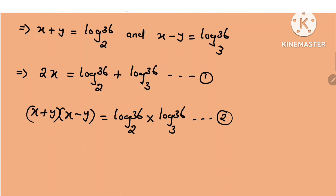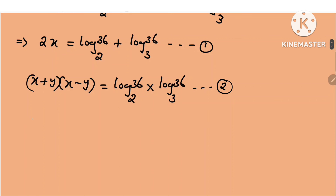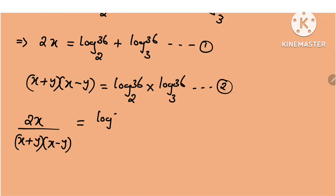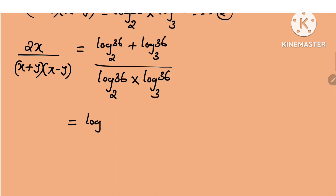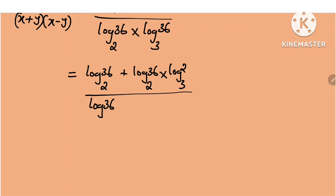Now, 2x divided by x squared minus y squared equals the quantity (log 36 to the base 2 plus log 36 to the base 3) divided by the log of 36 to the base 2 times the log of 36 to the base 3.